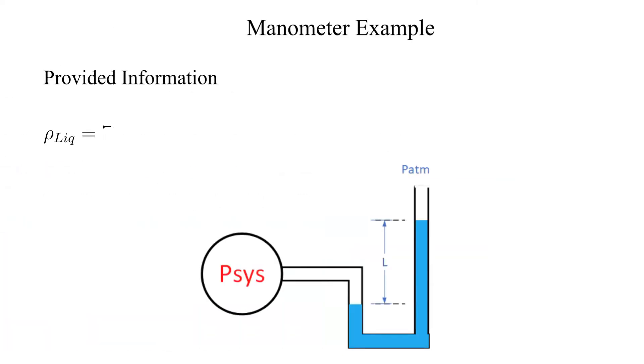The density of the liquid is equal to 78.8 pounds mass per cubic feet. Looks like we'll be using English engineering units.